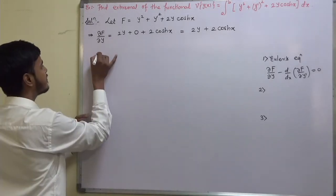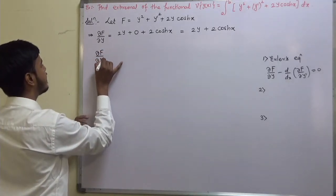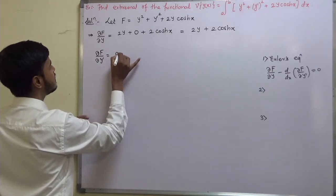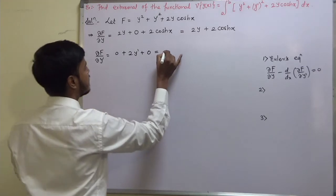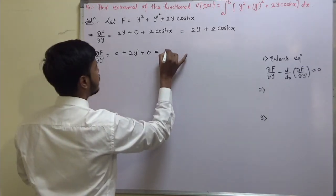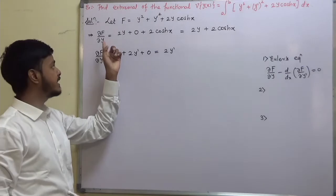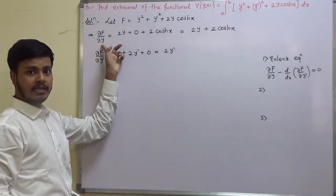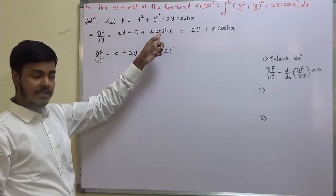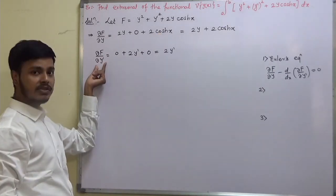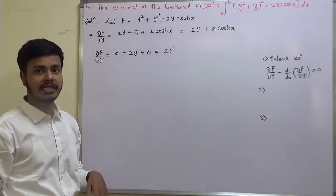Now del f by del y-dash: it is 0 plus 2y-dash plus 0, equal to 2y-dash. When finding the derivative with respect to y, the y-dash term is treated as constant, and vice versa.